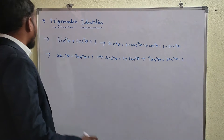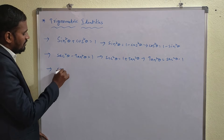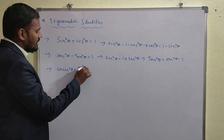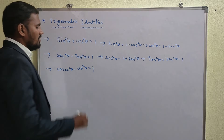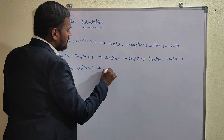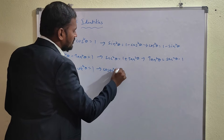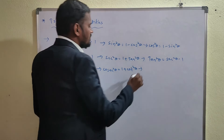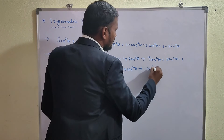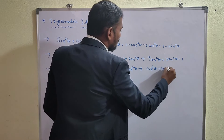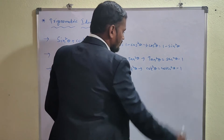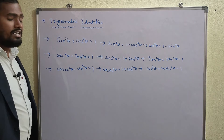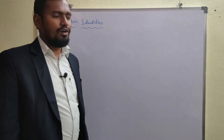The third identity is: cosec²θ - cot²θ = 1. From this, cosec²θ = 1 + cot²θ, and cot²θ = cosec²θ - 1. These are the three trigonometric identities.